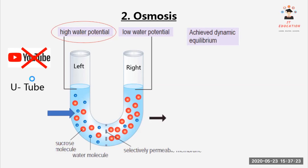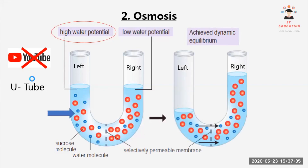On the right side there are more sucrose molecules, giving it a low water potential. The left side, having high water potential, has a higher potential to move across the membrane. As a result, water from the left side moves across the selectively permeable membrane to the right side, so the right side ends up with more water. This process is called osmosis.